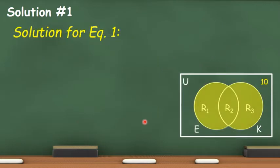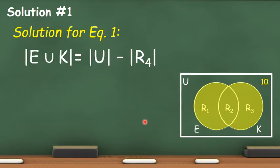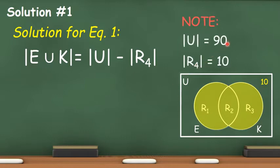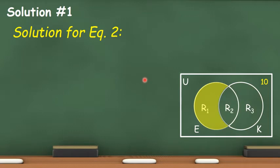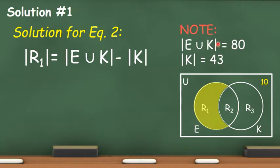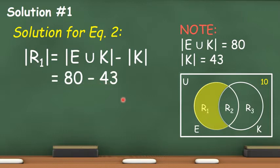Now we are going to solve our formulated equations starting from equation number 1. The cardinality of the universal set is 90 and the cardinality of R sub 4 is 10. Substituting the values, we have 90 minus 10, and the answer is 80, meaning there are 80 elements in the union of E and K. For our second equation, the cardinality of E union K is 80 and the cardinality of K is 43. Substituting the values, R sub 1 equals 80 minus 43, and the answer is 37, meaning there are 37 elements in E that are not in K.